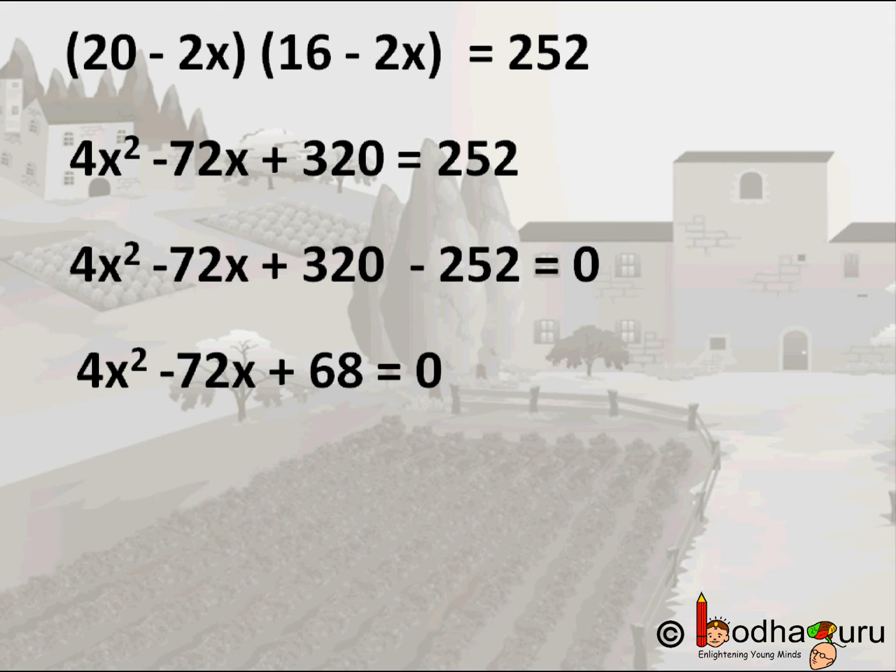Now taking the coefficients of all the terms—4, 72, and 68—we know the common factor is 4. We can divide both sides by 4 to reduce it. So finally we get x² - 18x + 17 = 0.